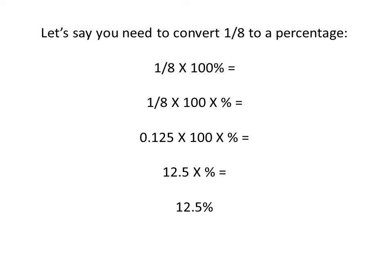This also works for fractions. Let's say we need to convert the fraction one-eighth to a percentage. We're going to multiply one-eighth times one hundred percent — one-eighth times one hundred times the percent symbol. We can convert one-eighth to a decimal: a fraction means division, so one divided by eight gives you 0.125. Multiply that times one hundred times the percent symbol. 0.125 times one hundred is 12.5, so the answer is 12.5 percent. One-eighth equals 12.5 percent.